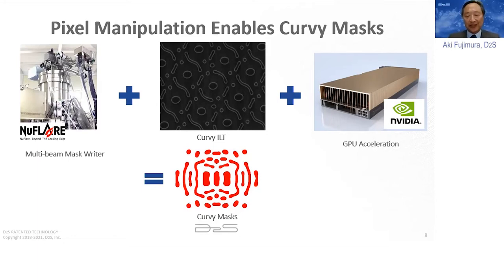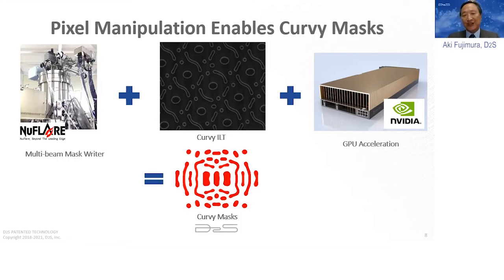Pixel-based manipulation in computing terms is a mathematical dual — meaning anything you can do in one, you can do in the other. Anything you can do in pixel space, you can do in edge-based geometry or contour-based manipulation, and vice versa. But runtimes are totally different, and pixel-based is also subject to the resolution requirement — it only works if you have a sufficiently small pixel size to capture the desired resolution.